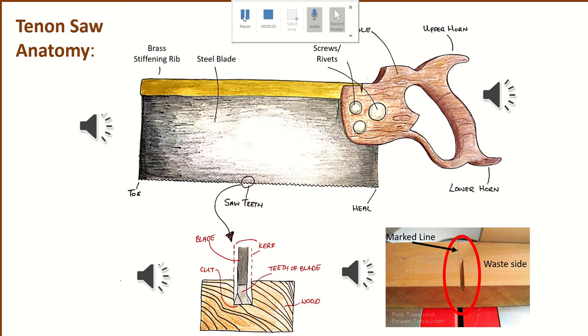On the handle, in order to connect the handle to the blade, there are screws and rivets and they tighten the handle against the blade to make sure it's nice and secure. And moving on then to the blade.